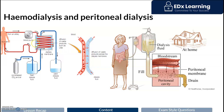In this lesson, we're going to explore the benefits and disadvantages of hemodialysis and peritoneal dialysis. Recall that hemodialysis involves the use of an external dialysis machine, and blood is taken out via an arteriovenous fistula, passed through a semi-permeable membrane where urea and waste products diffuse out passively and beneficial ions diffuse in.